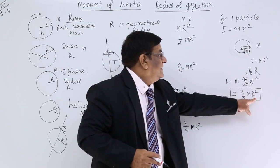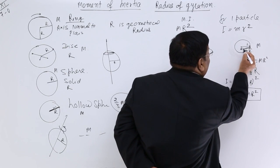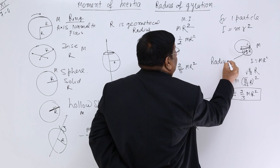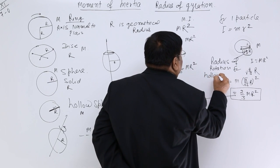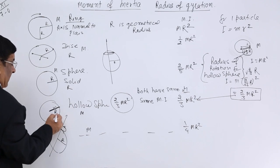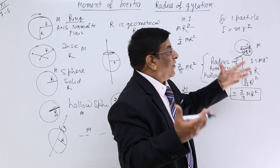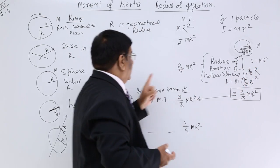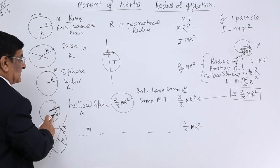So that root √(2/3) r — I will call it radius of rotation. The geometrical radius of the hollow sphere is r. The radius of rotation for the hollow sphere is √(2/3) r, because when a mass at this radius rotates, it gives the same moment of inertia as the hollow sphere.